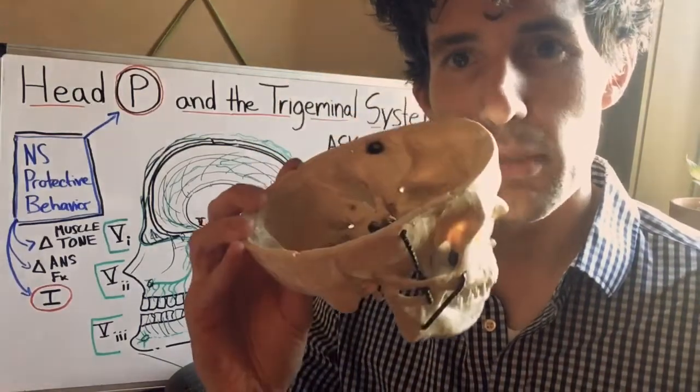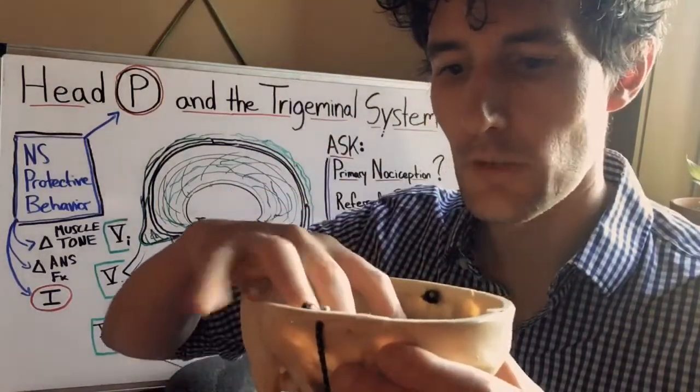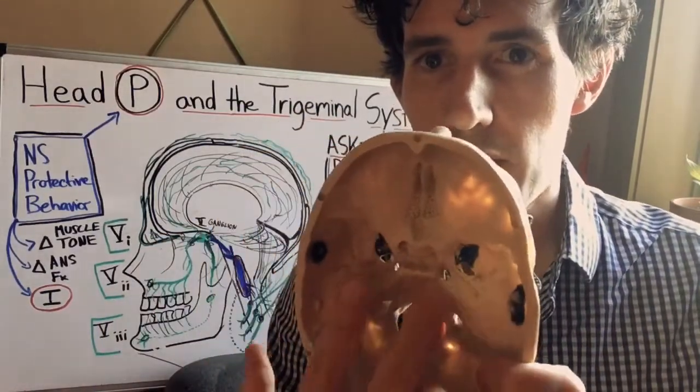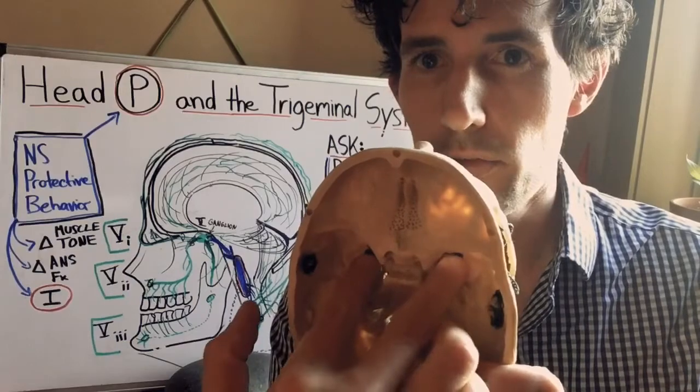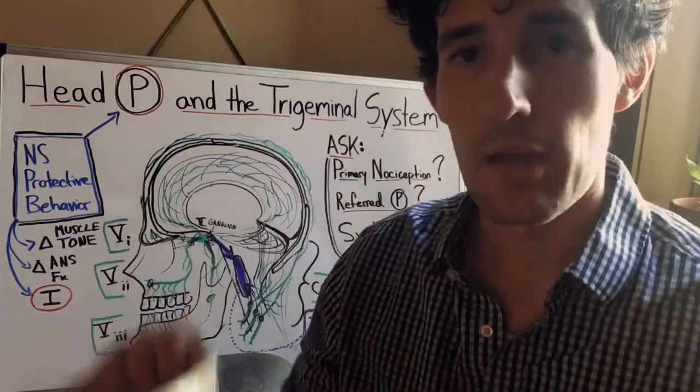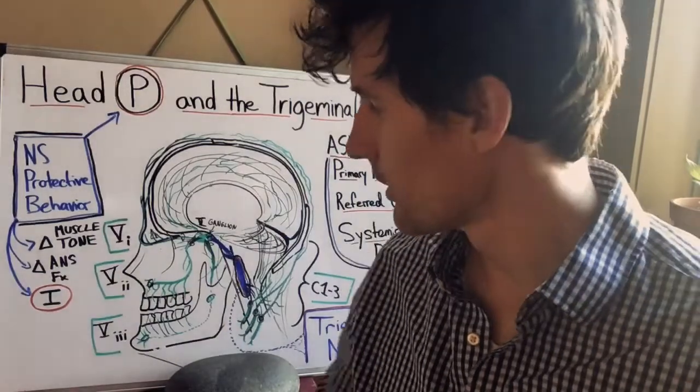They are sitting in the middle cranial fossa in the greater wing of the sphenoid and from there they send projections anteriorly and inferiorly to innervate the front and the top half of the skull, like so.